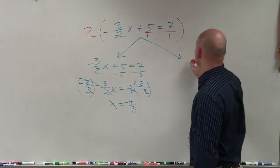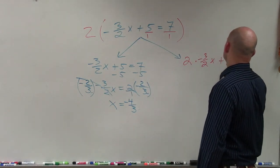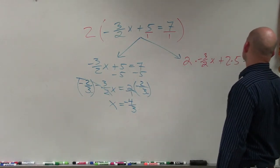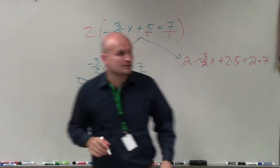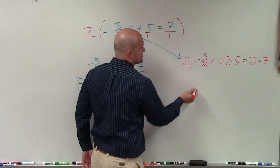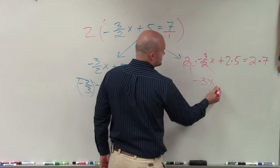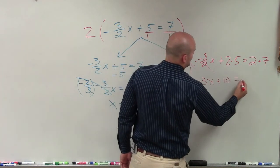So the other way you can solve this is multiply everything by 2. So when you multiply everything by 2, it looks like this. 2 times -3/2x plus 2 times 5 equals 2 times 7. You girls got that? So now, when I multiply this, multiply across, those divide out.